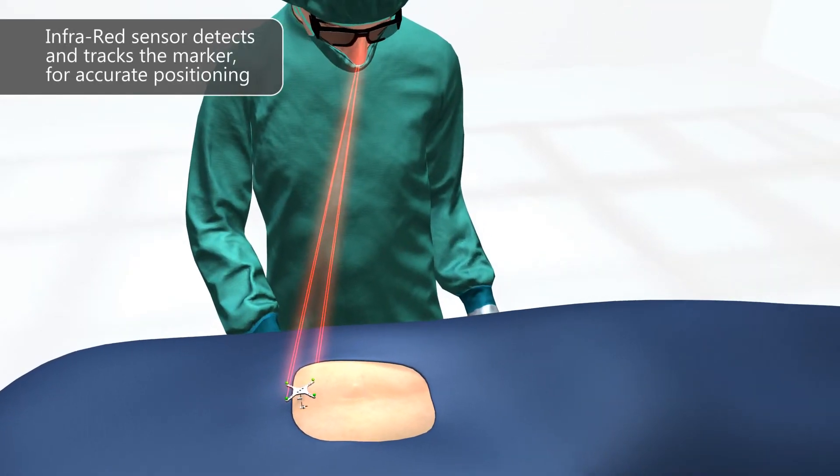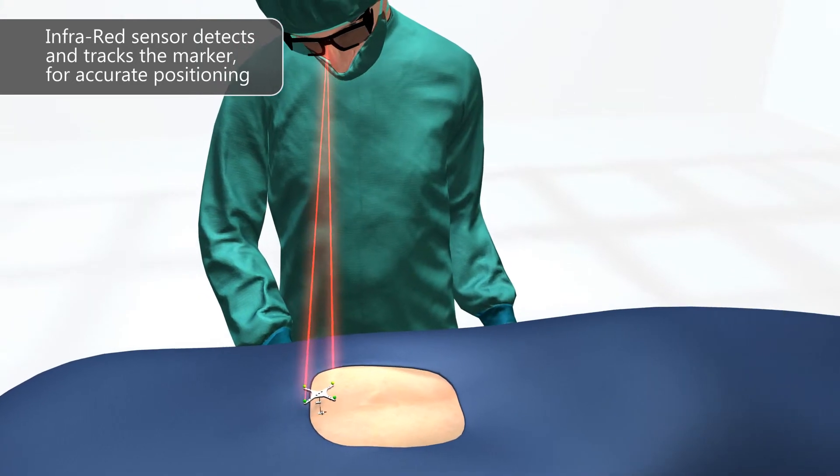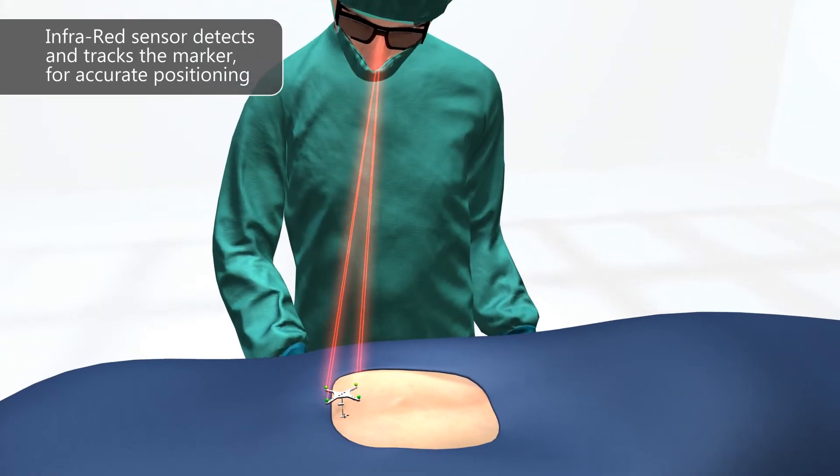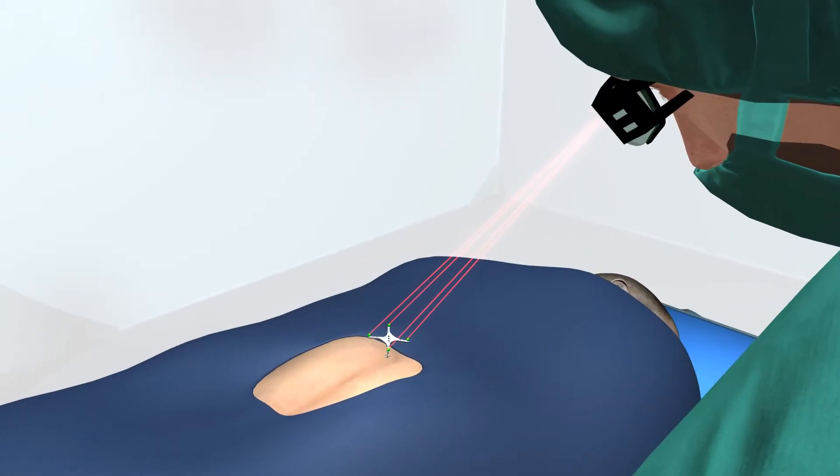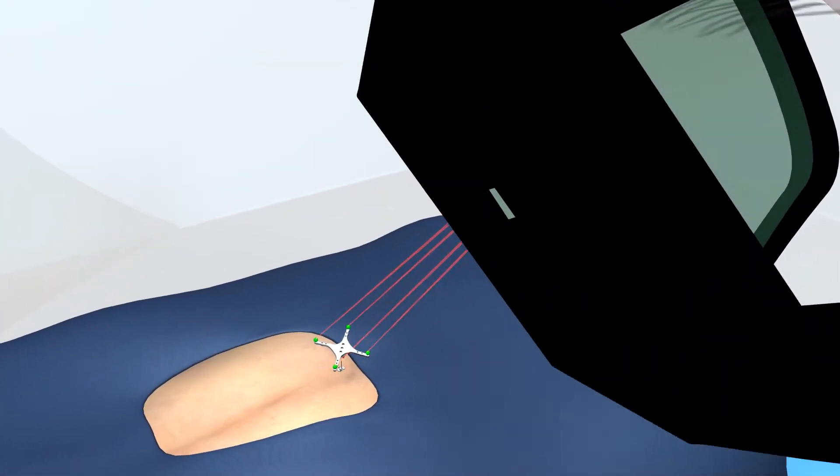The infrared sensor on the visor detects and tracks the marker and determines the position of the surgeon's head. Using our patent-pending technology, the visor projects in real time the patient's 3D spine onto the surgeon's retina.